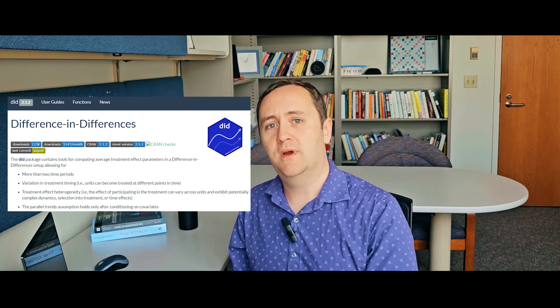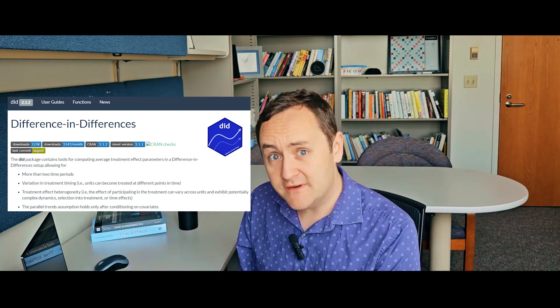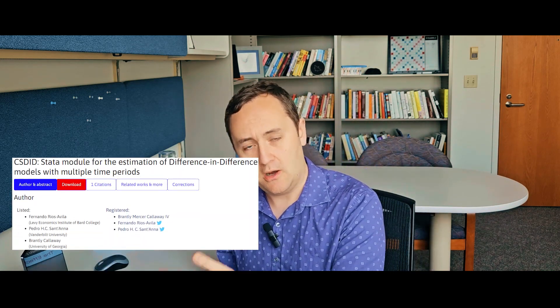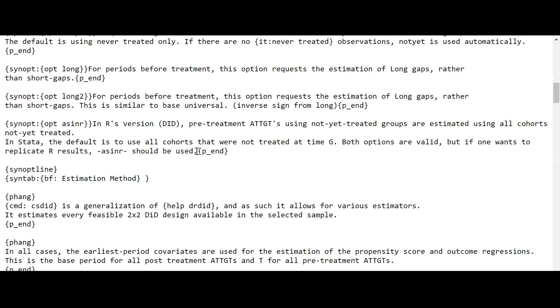Here's a great example: a package that runs the Callaway and Sant'Anna difference-in-differences estimator, written by the same people across R and Stata. In the options, you can find a setting to make the results look like the other language. The same people writing the same estimator in two different languages made different choices, such that the default results differ depending on which language you chose — and they knew this well enough to add an option to make one look like the other.